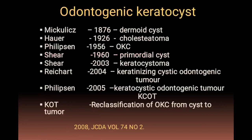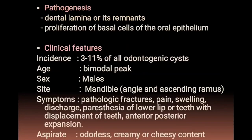The odontogenic keratocyst (OKC) has many synonyms such as dermoid cyst, keratocyst, and primordial cyst. It was named by Philipsen in 1956 and arises from the dental lamina or its remnants by proliferation of basal cells of oral epithelium.